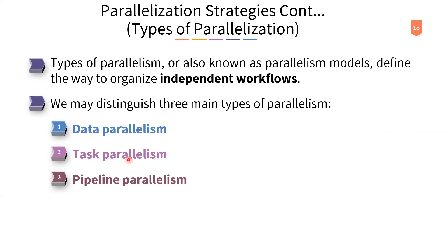Both data-level and task-level granularity can apply to these parallelism types. Programs can be executed in a parallel way using either large coarse-grain components or smaller fine-grain components — both are valid parallel execution approaches.